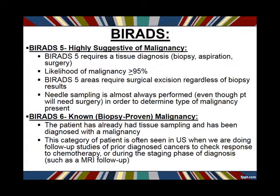BI-RADS 6 is our last category — biopsy-proven, known malignancy. We see this category often in ultrasound when a patient has had a biopsy, we found a cancer, but the cancer is extensive. Often these patients undergo chemotherapy, and we follow them with ultrasound to see how the cancer is responding over time. Sometimes we do chemotherapy before surgery in extensive cases to try to shrink the cancer, or the patient is in the staging phase and is having MRIs and additional ultrasound tests. BI-RADS 6 means we already know the area we're looking at is a cancer.